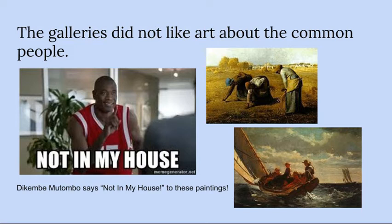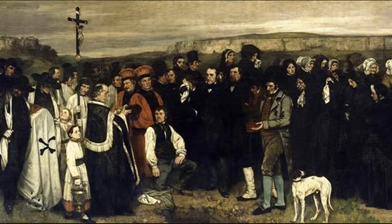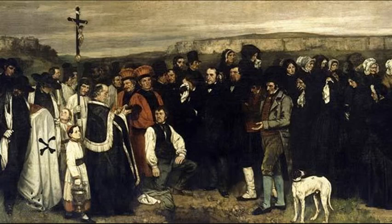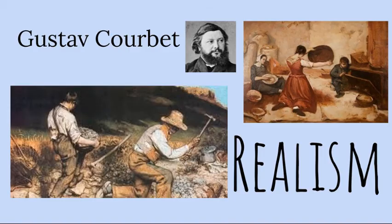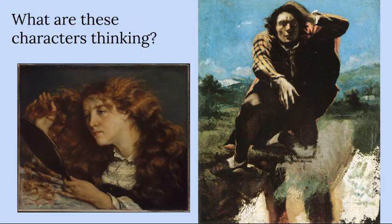One artist named Gustave Courbet was allowed to show his artwork in a gallery even though it wasn't a Bible story or a picture of a king or a queen. His picture showed an image from real life. Gustave Courbet created a style called realism. This means that his artwork is about real life, not artworks about history or famous people. He used realistic colors too.